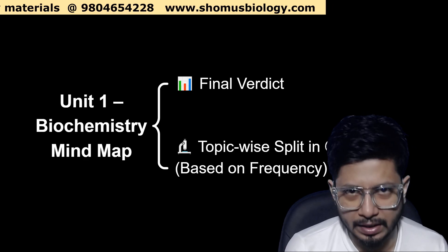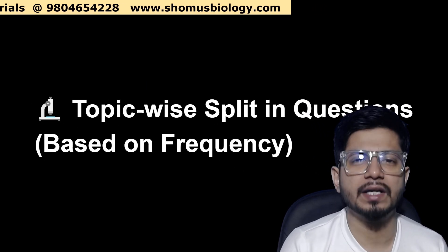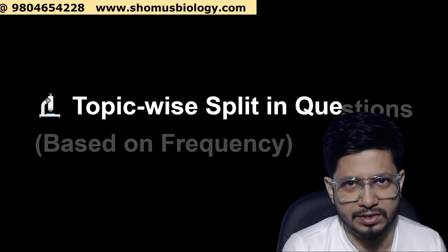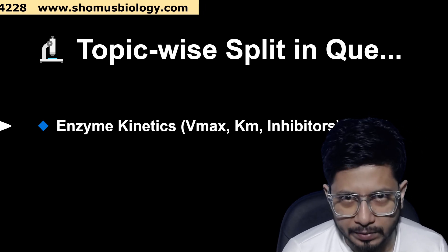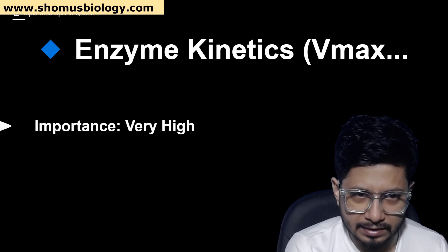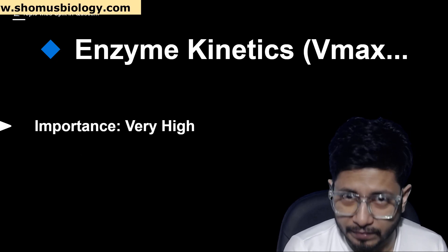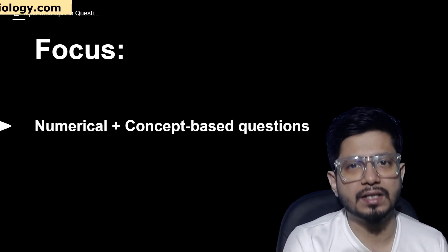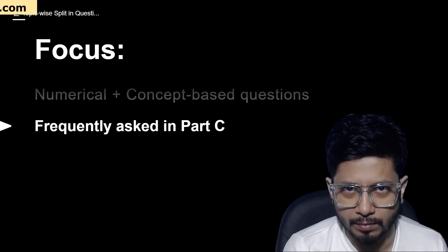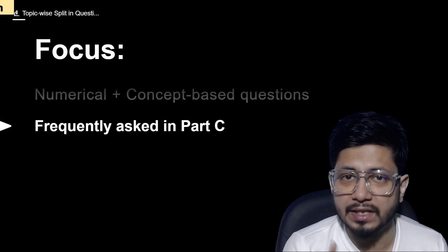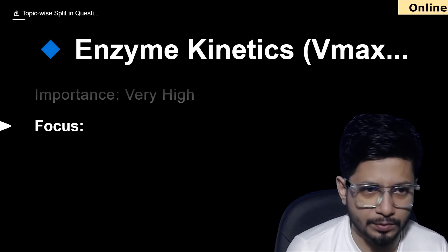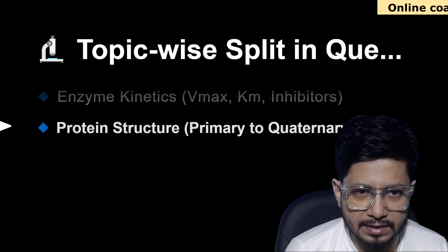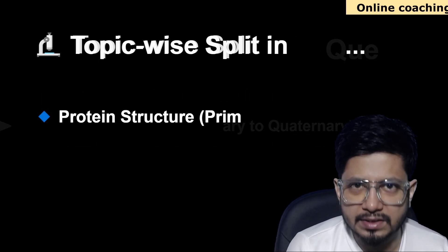Topics repeated almost every single session include enzyme kinetics — Vmax, Km, and inhibitors — which are very important. The importance level is very high. The focus for enzyme kinetics is on both numerical questions and concept-based questions, which are equally asked. Enzyme questions frequently appear in Part C as four-mark questions.